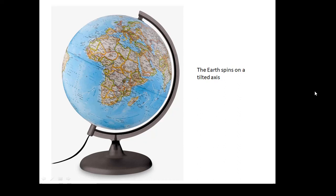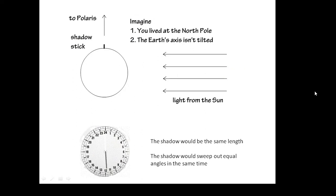Things are complicated basically because the earth spins on a tilted axis. The earth spins around in about 24 hours — actually a little bit less than 24 hours — but this axis is tilted 23.5 degrees. If the earth's axis wasn't tilted, and imagine you lived at the north pole: your latitude would be 90 degrees. If you put a stick in the ground there, the length of the shadow wouldn't change, and it would take exactly equal intervals — every hour it would sweep out the same angle. That would be a great way of telling the time using that shadow.